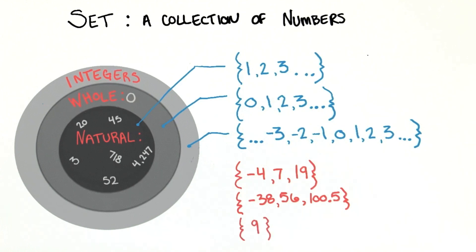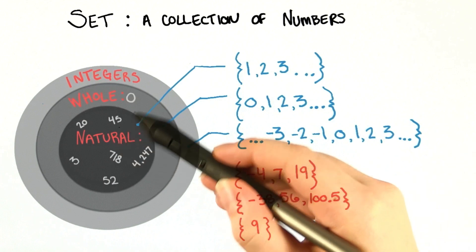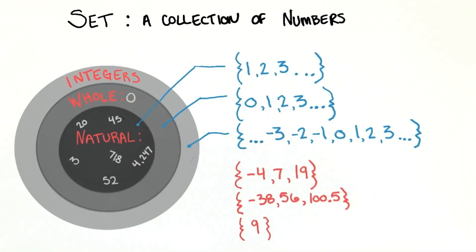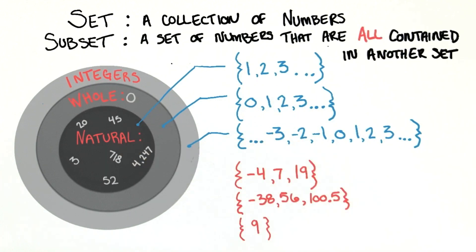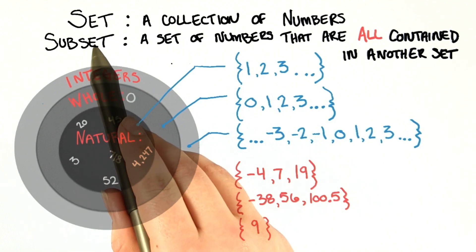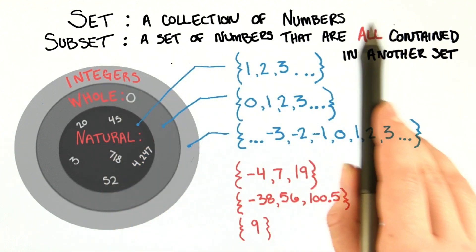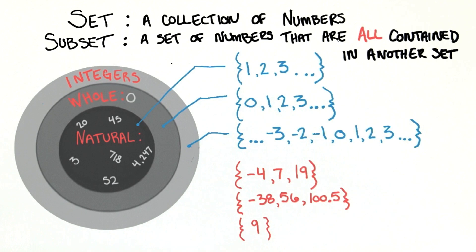Now, since all of the numbers in the set of natural numbers are also in the set of whole numbers, we call the natural numbers a subset of the whole numbers. A subset of a set is another set of numbers that are all contained in the original set.